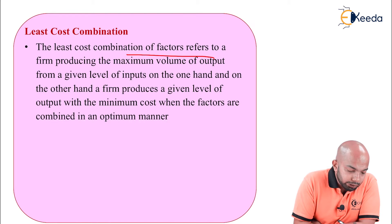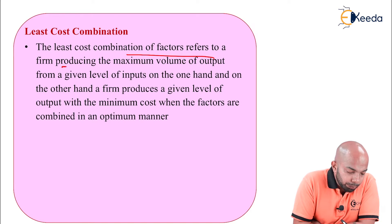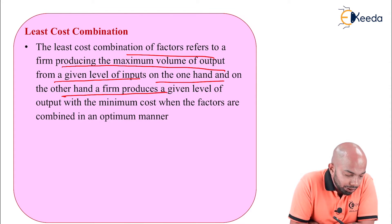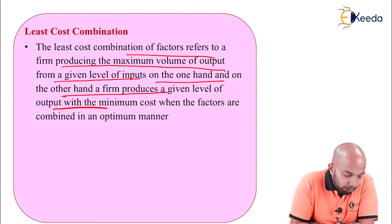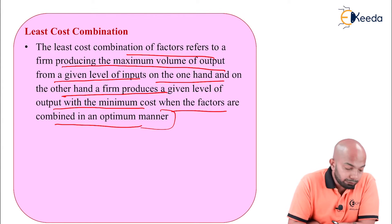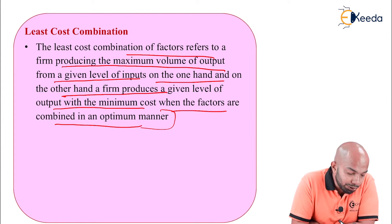The least cost combination of factors refers to a firm producing maximum volume of output from a given level of input on the one hand, and on the other hand a firm produces a given level of output with the minimum cost when the factors are combined in an optimum manner.